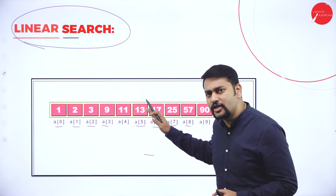I have an array here, and I need to search for 57 in this array. First, I will match with the first element — not matching. Then I will try to match 57 with the second element — not matching. Please watch the simulation carefully: I am comparing 57 with all the indexes. I try to match with the value at each index — comparing with 9, not matching.